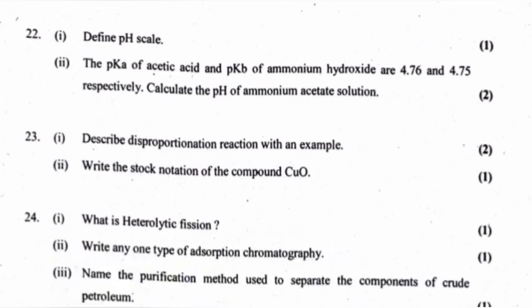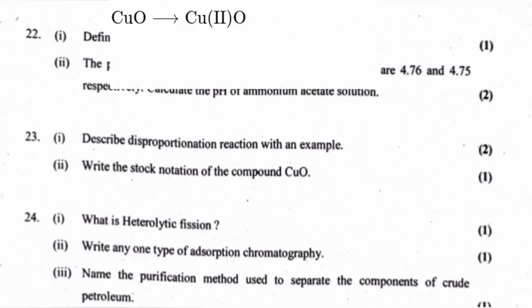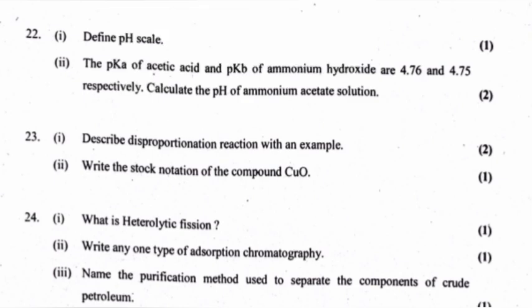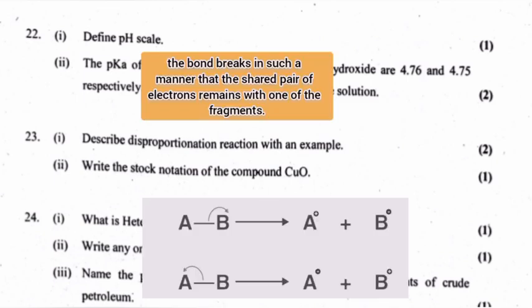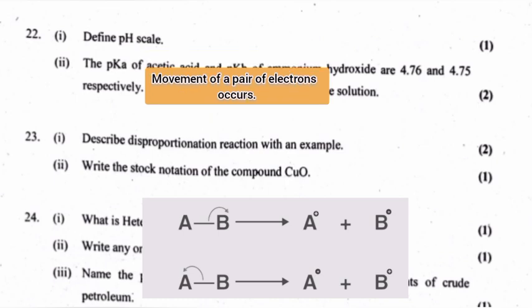Write the stock notation of the compound CuO. What is heterolytic fission? In heterolytic fission, the bond breaks in such a manner that the shared pair of electrons remains with one of the fragments; movement of a pair of electrons occurs.